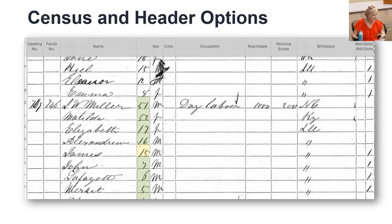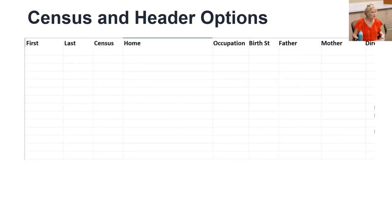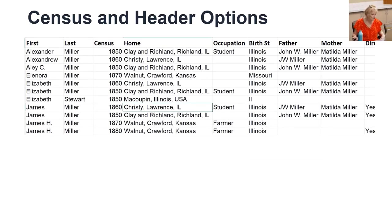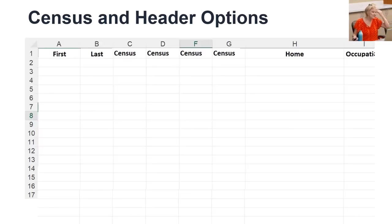Our first step is to enter headers based on what you want, but what do you want and how do you want to see it? Just because your data comes this way doesn't mean that's how you want it — you get to change it up. In this version, we create only one column for census that we can sort or filter to see what year we're looking for, but we can't see them side by side.